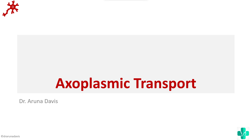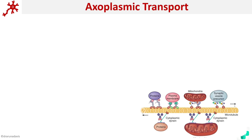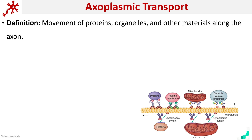Hi all, in this video we are going to see about axoplasmic transport. Axoplasmic transport is nothing but the transport of materials along an axon of a neuron. By definition, axoplasmic transport is a movement of proteins, organelles and other materials along the axon.